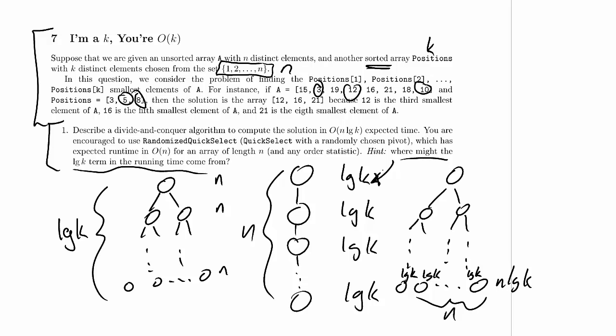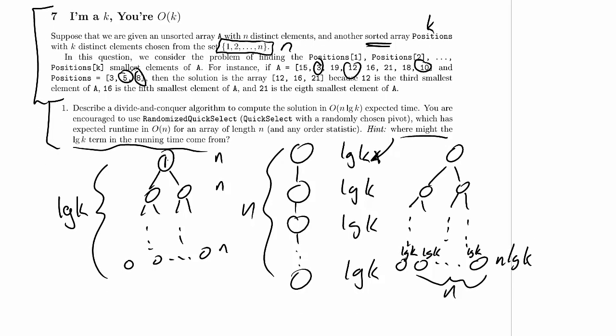If the algorithm has log k depth, it means we're dividing the positions array roughly in half at each recursive call. Let's imagine the positions array starts at size k, then splits into k/2 and k/2 at each level, down to a base case of 0 or 1. We'll figure out what happens to array A during this process separately.